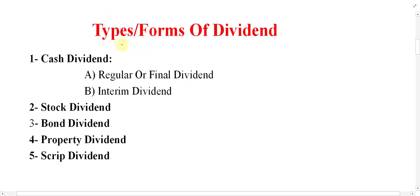In the previous video we discussed dividend. In this video I want to talk about the forms of dividends — how can you pay dividend and what are the different forms? As you can see, there are basically five types of dividends: cash, stock, bond, property, and scrip.